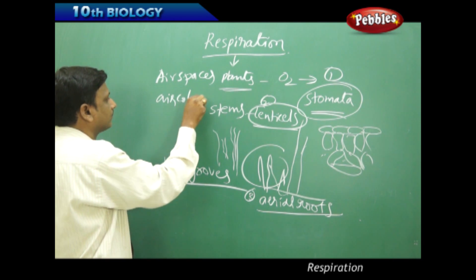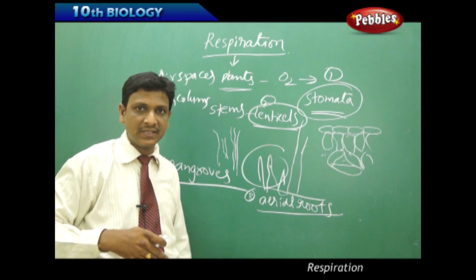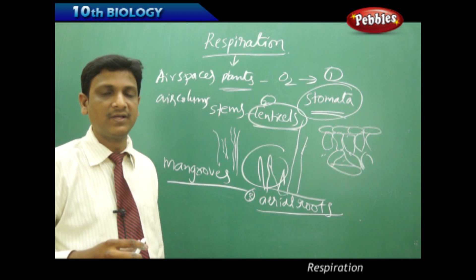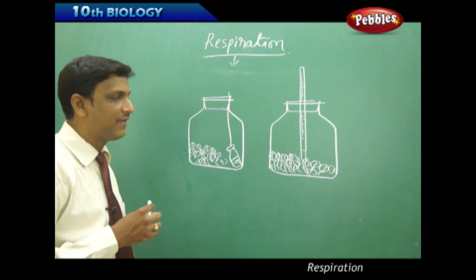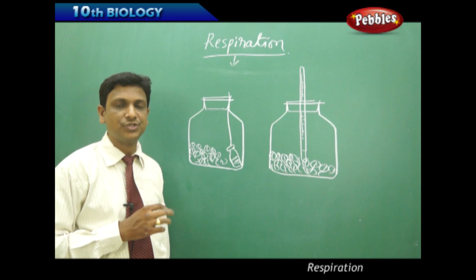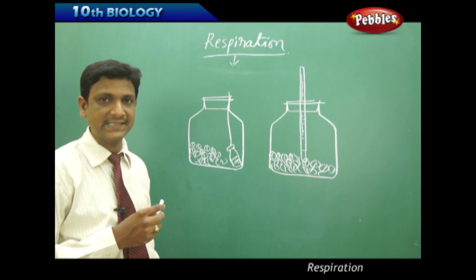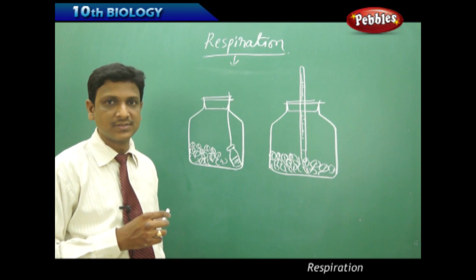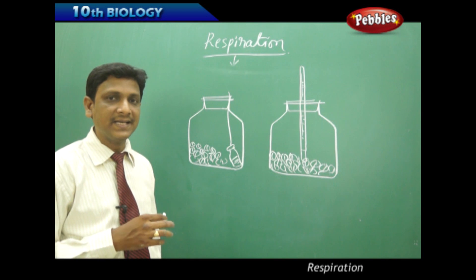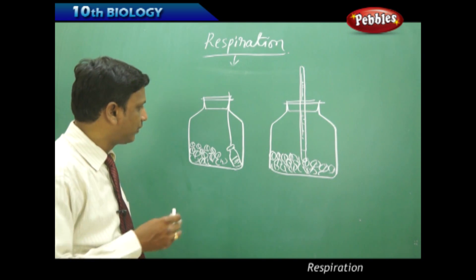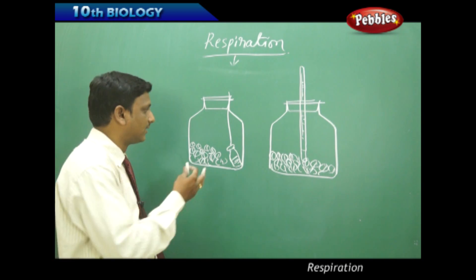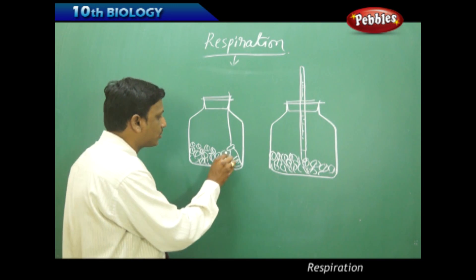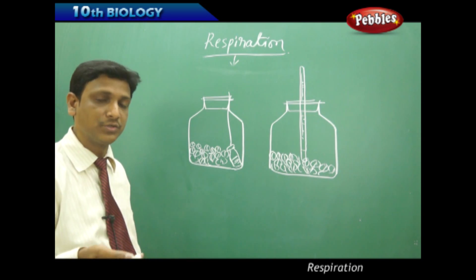At the tissues, the exchange of oxygen and carbon dioxide takes place by the process of diffusion. Now we have an activity to prove two things: one, that carbon dioxide is released during respiration in plants, and two, that heat is evolved during respiration. We are not using full plants but sprouted seeds, which are equivalent to small plants.